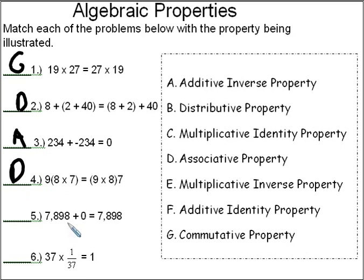In number 5, we're adding a 0 to our number. And when we add 0, we get the original number. So number 5, we call that the additive identity property, which is letter F.